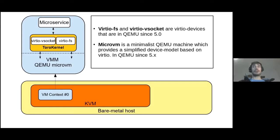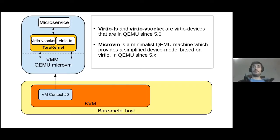VirtioFS and VirtIO vSocket are both VirtIO devices. Different from other devices, they are internal devices, so they are more performant than emulated devices. VirtioFS has been in QEMU since version 5.0. In the case of MicroVM, it is a minimalistic QEMU machine inspired by Firecracker. It provides several benefits like reducing the device model based on VirtIO, improved booting time, and reduced footprint.